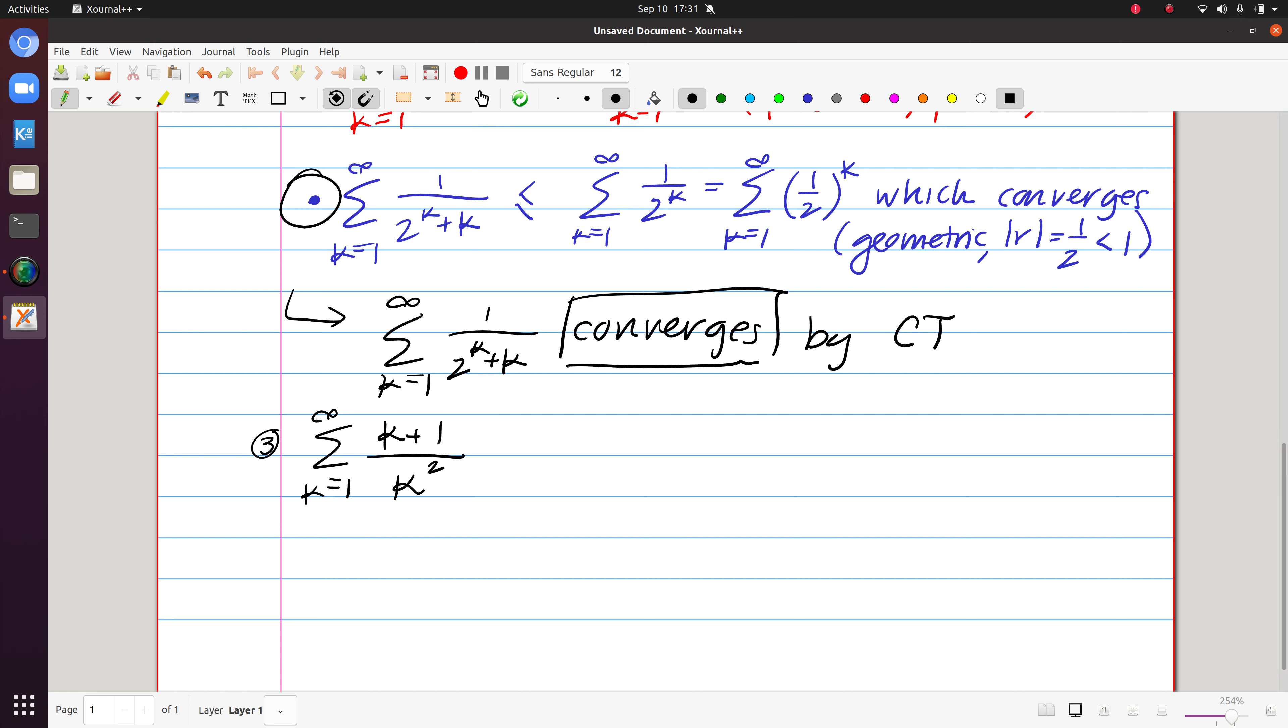Again, there are really kind of two possibilities that you could see here. One over k squared and k over k squared. So those are the two things that kind of jump out at me.